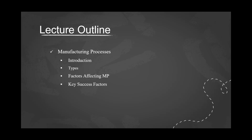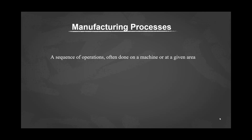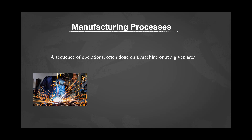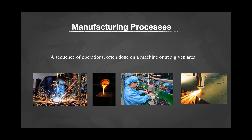Let's start. Manufacturing processes are a sequence of operations performed on a machine or at a given area — for example, welding, casting, assembling, and cutting. During a manufacturing process we add, subtract, or form materials in order to give a desired property or shape to the workpiece. The cycle of manufacturing processes that convert material into parts and products starts immediately after the raw materials are extracted from minerals or produced from chemicals or natural substances.